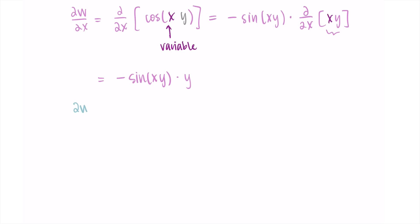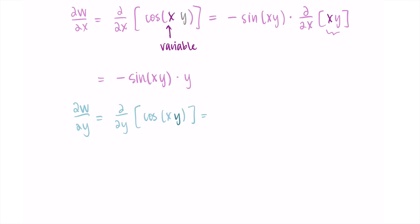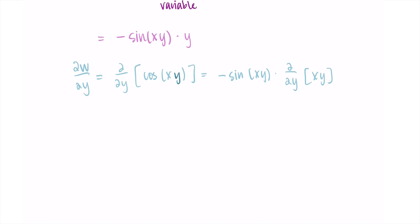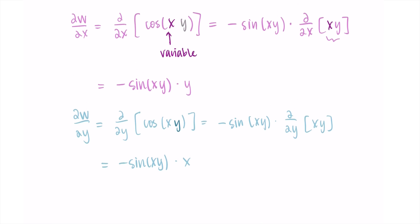Now for the partial derivative with respect to y. Same sort of process — y is now the variable. The derivative of cosine is negative sine, we leave the inside alone, and multiply by the derivative of the inside. The derivative of x times y with respect to y is just x, so we get negative sine of xy times x. Those are our two partial derivatives.